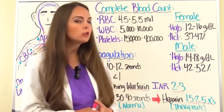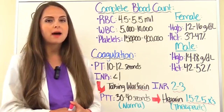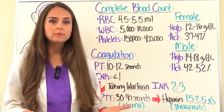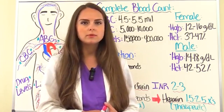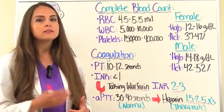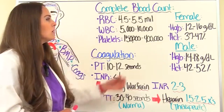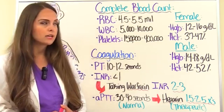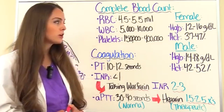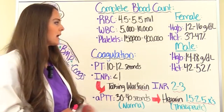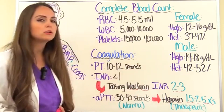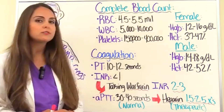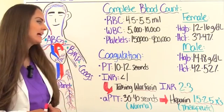Now let's look at hemoglobin and hematocrit levels. This tells us about our red blood cells, and we really use this when transfusing packed red blood cells. For a female, a normal hemoglobin range is 12 to 16 grams per deciliter and a normal hematocrit is 37 to 47%. For a male, a normal hemoglobin is 14 to 18 grams per deciliter and a normal hematocrit is 42 to 52%.